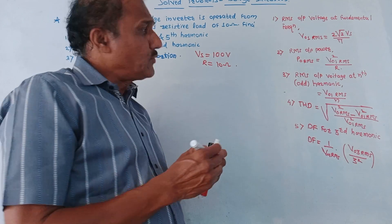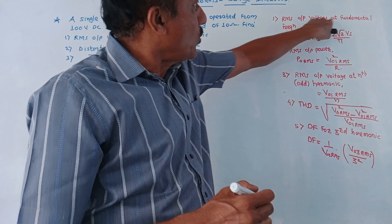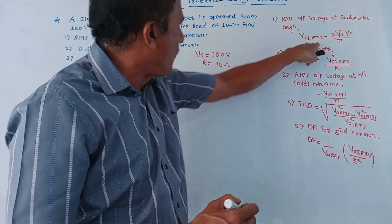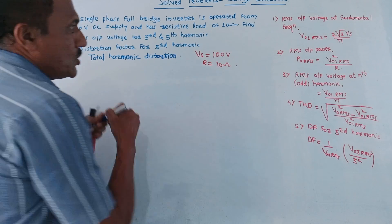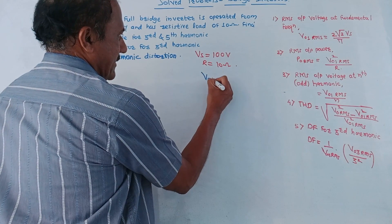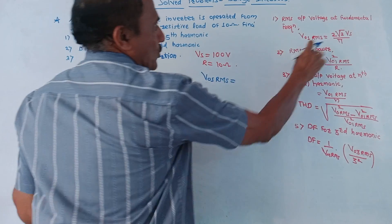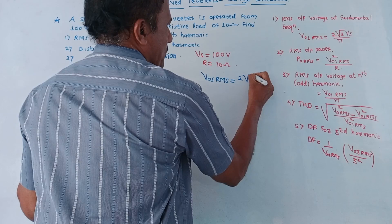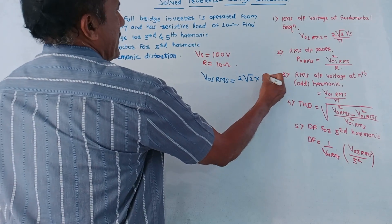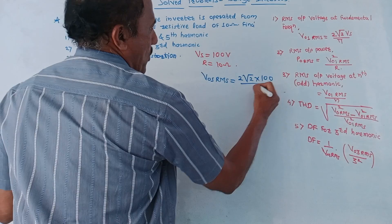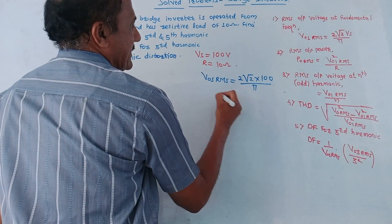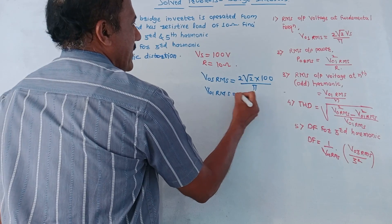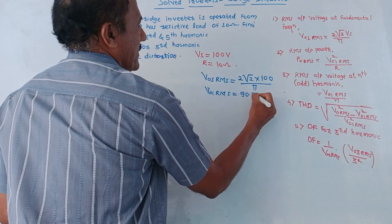Before doing these calculations, first we will calculate the RMS output voltage at fundamental frequency, that is V01RMS. So V01RMS equals 2√2·Vs upon π, which becomes 2√2 × 100 upon π. So V01RMS will be 90.03 volt.